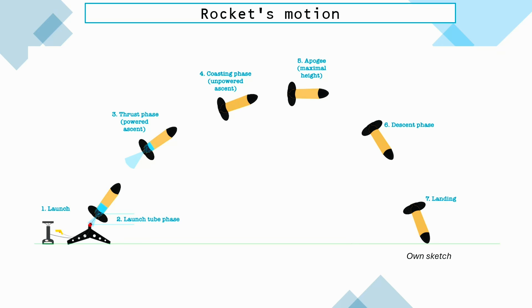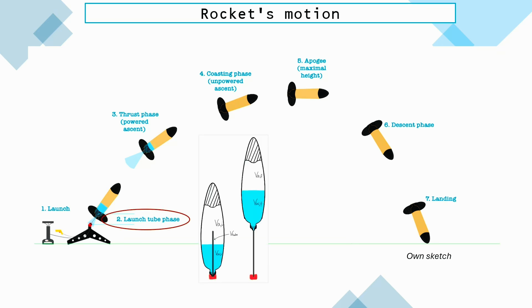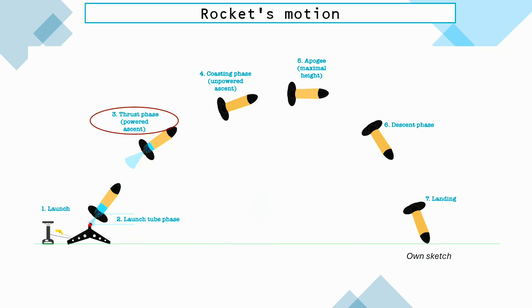Rapid air expansion during the launch tube phase, when the rocket slides up the launch rod, followed by the dynamic pressure and mass change during the thrust phase, as well as the aerodynamic profile, are the main factors that complicate the modeling of the rocket's motion.